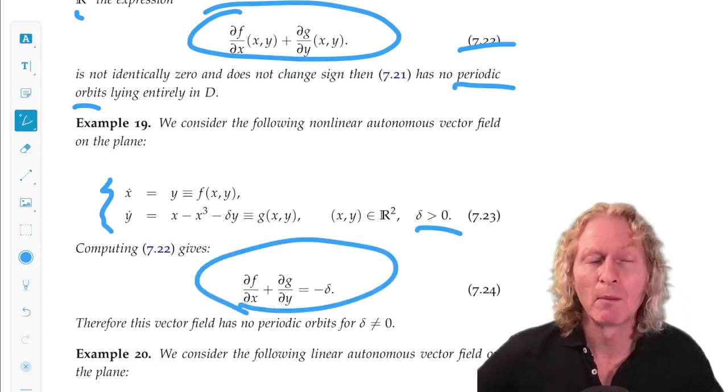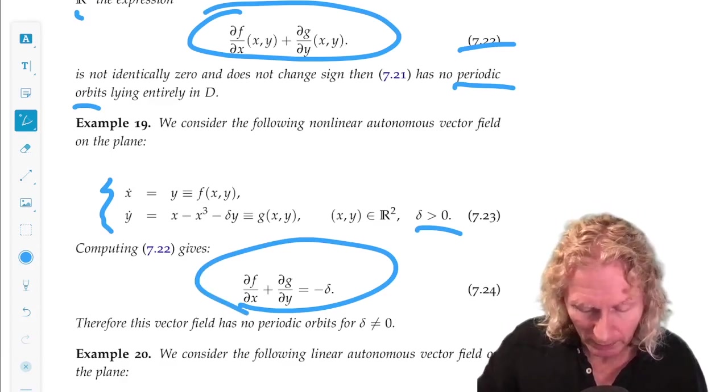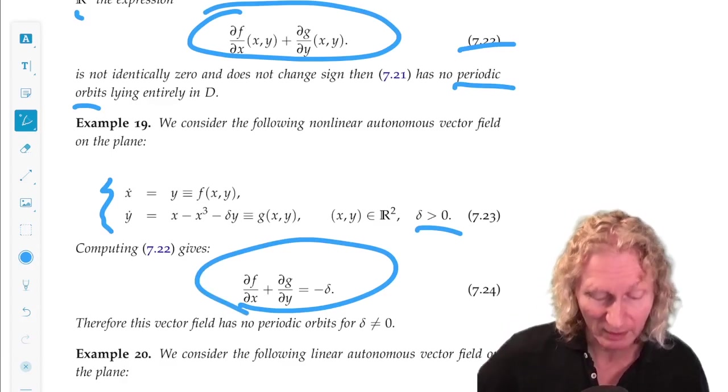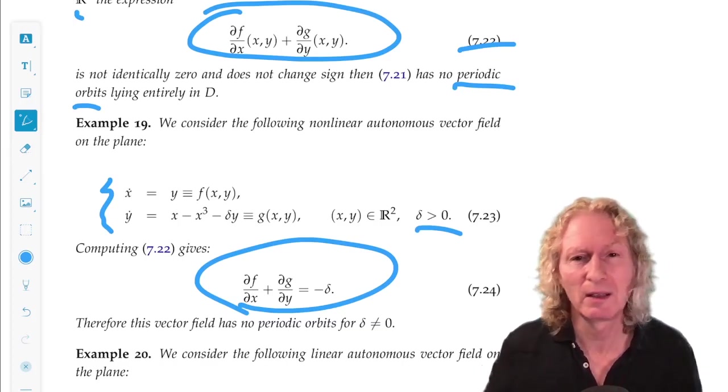We get, it's minus delta. So it's not identically zero if delta is strictly greater than zero and it doesn't change sign. Well, where's this simply connected region? Just take the entire plane.